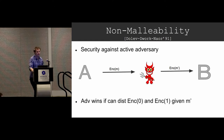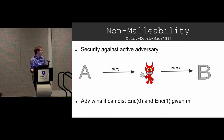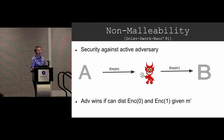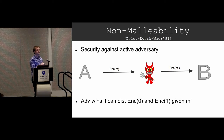Non-malleability is a security definition. Essentially, you can think of it as semantic security but with an active adversary. The adversary sits on the channel, but now he's going to tamper the ciphertext as it goes from Alice to Bob.